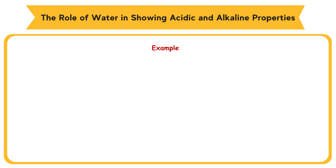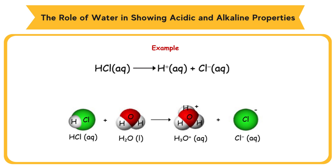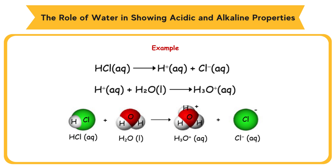Example: hydrogen chloride molecules react with water and ionize to produce hydrogen ions, H+. Hydrogen ions then attach water molecules via the formation of a dative bond to produce hydroxonium ions, H3O+.